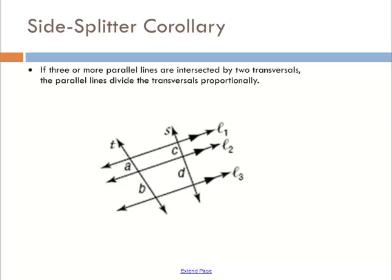The side splitter corollary basically is an addition onto the side splitter theorem, saying that if instead of triangles, we're just looking at three parallel lines, it has the same proportion. A over B is the same as C over D.